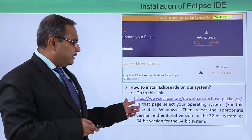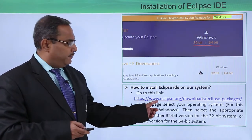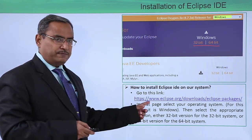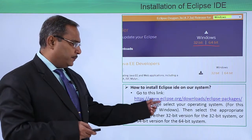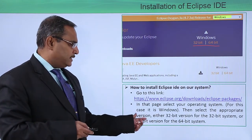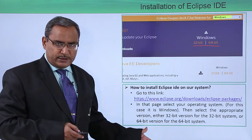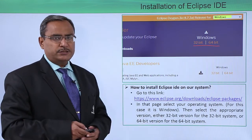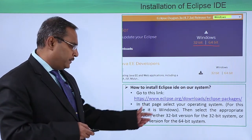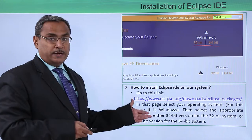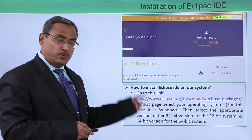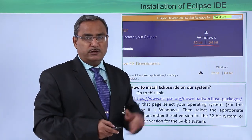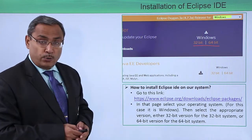So at first, go to the link provided here. In that link, you are supposed to select the operating system — for this case, it is Windows. Select the Windows environment and then select the appropriate version, either the 32-bit version or the 64-bit version, whatever you are having, and then the respective installation will start.